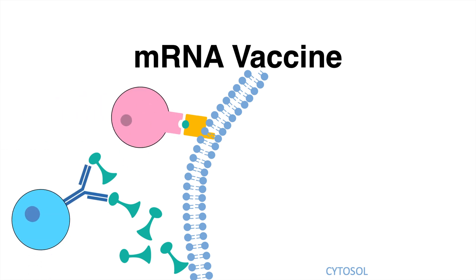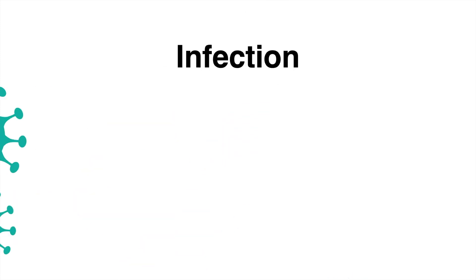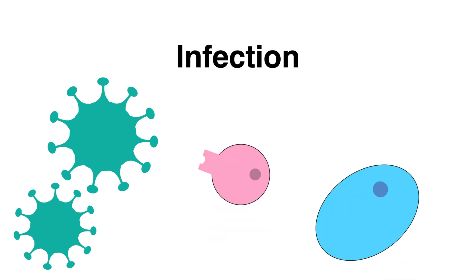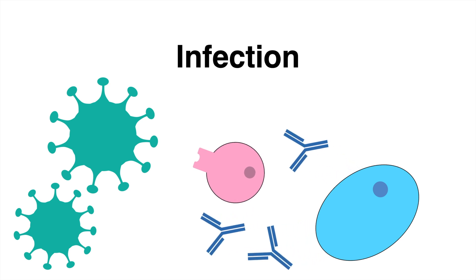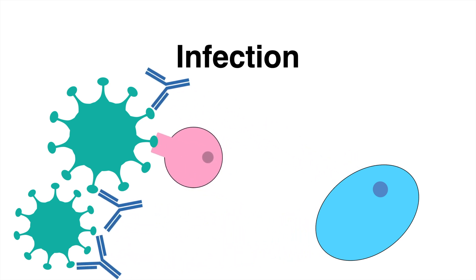Cells of the immune system will answer with an immune response and train the body for this pathogen. In case of a real infection, the immune system recognizes the virus and quickly mounts a strong response. The virus is neutralized and prevented from entering host cells or even entirely inactivated.